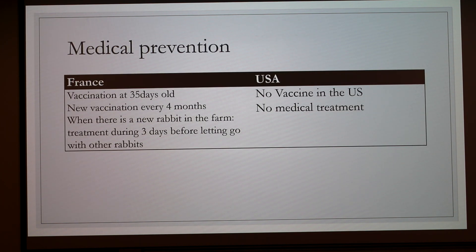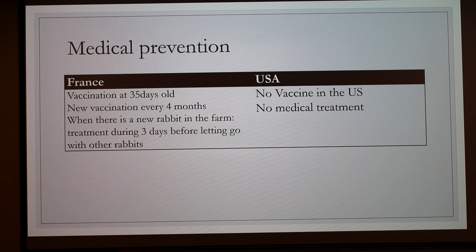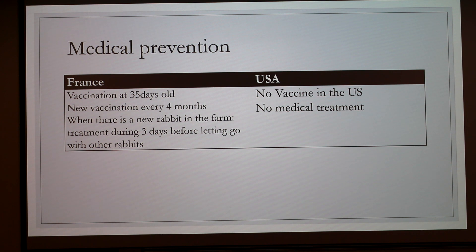Regarding medical prevention in France and the USA: in France, you have to vaccinate your rabbit when it is 35 days old, and then there is a new vaccination every 4 months. When there is a new rabbit in the farm, you have to quarantine it for 3 days before letting it go with other rabbits. In the USA, there is no vaccine against myxoma virus and there is no medical treatment.